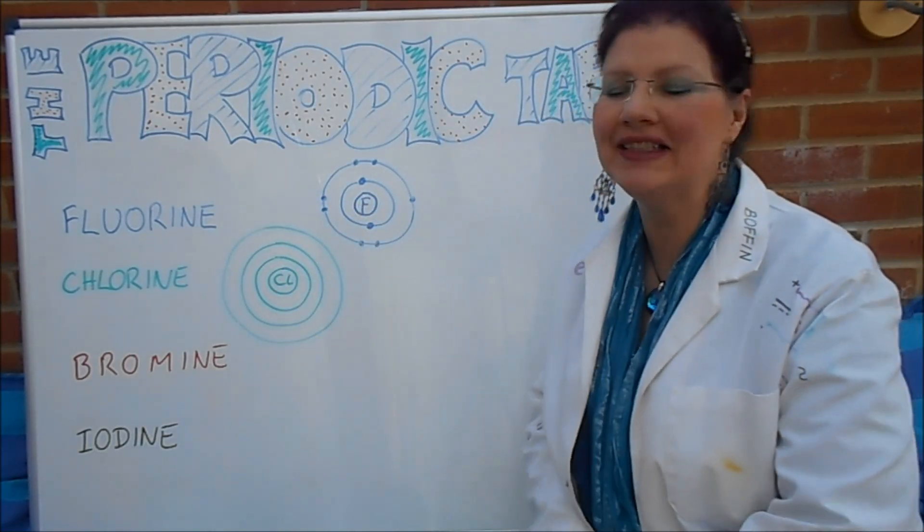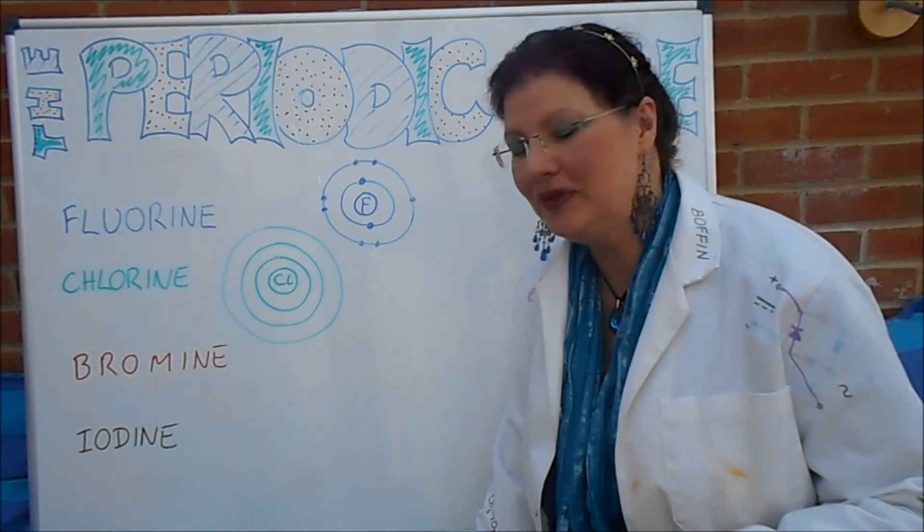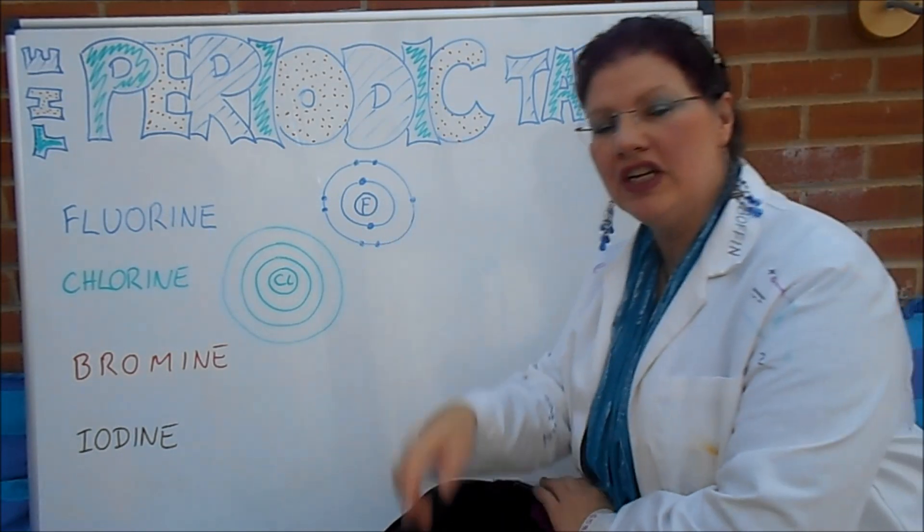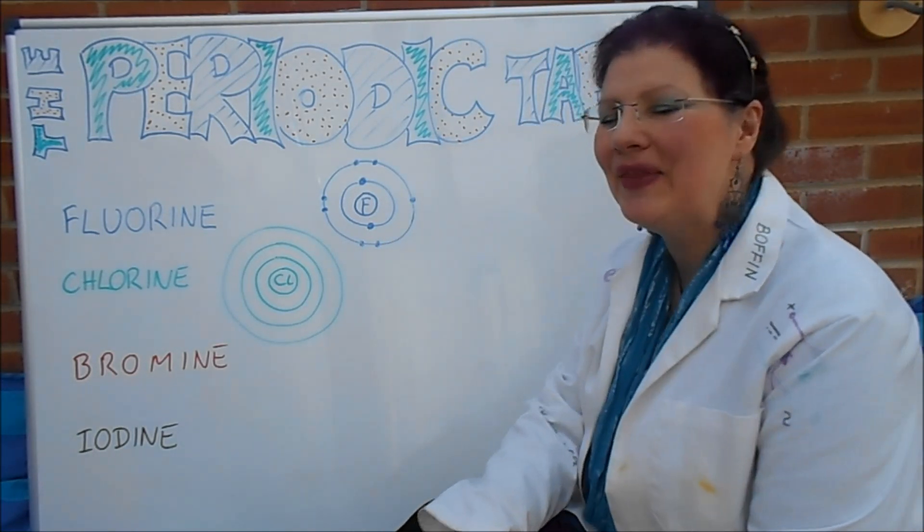There is another one at the bottom called Astatine, but that's radioactive and it doesn't have any stable isotopes, so we don't tend to use that one very much. To be honest, we don't tend to use Fluorine that much either, mainly because it's so reactive. I'll tell you a little more about that later.